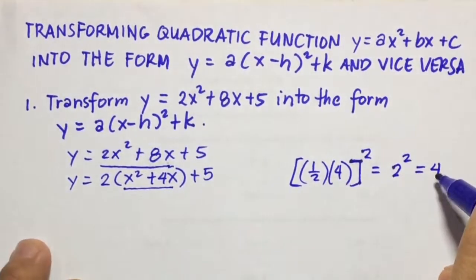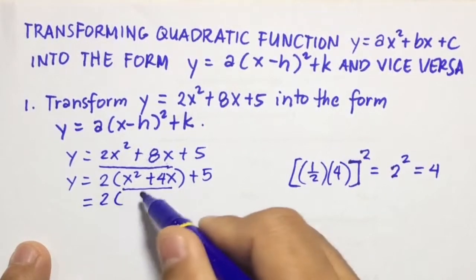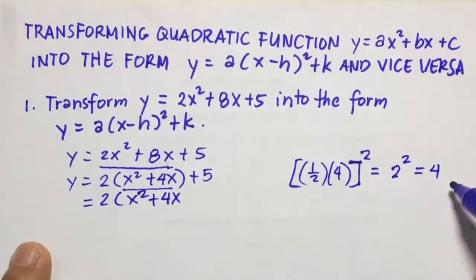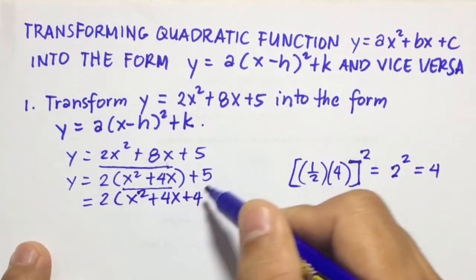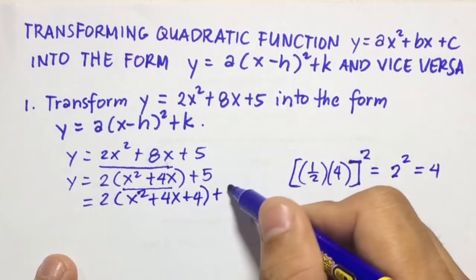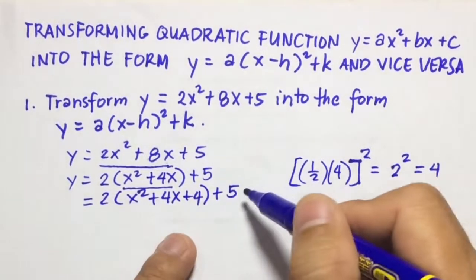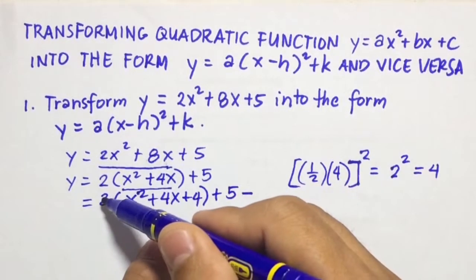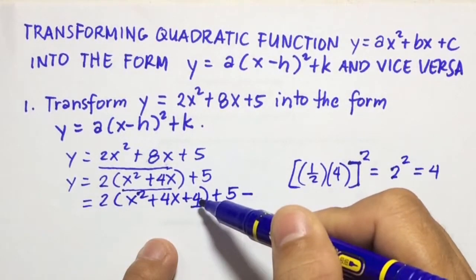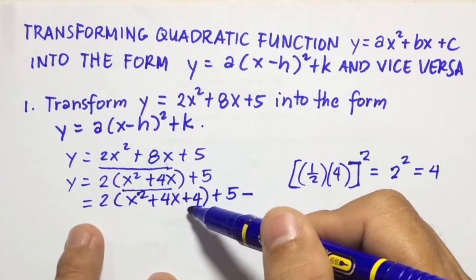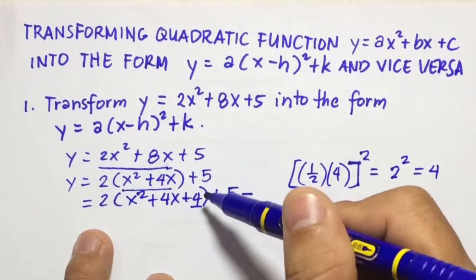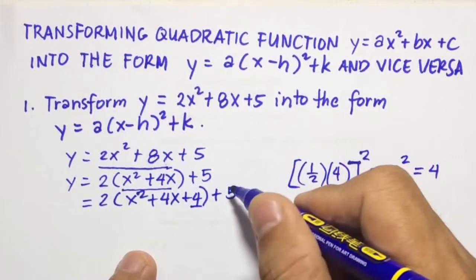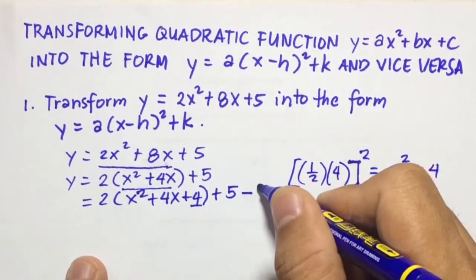So we're going to add in here 2. Completing the squares, we're going to have x squared plus 4x, then the number here which is 4, so plus 4, then plus 5. Then we're going to subtract the result here — so we add 4. What we're going to do is multiply 4 by 2, so 4 times 2 is 8.